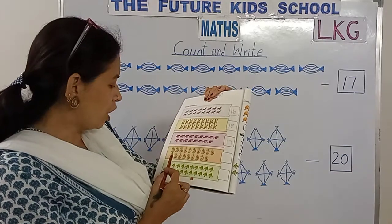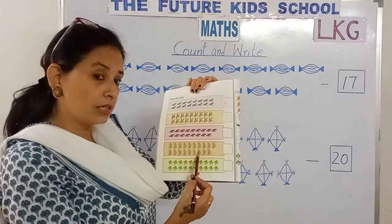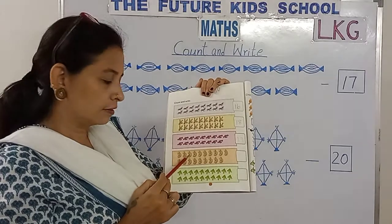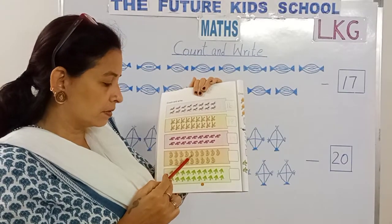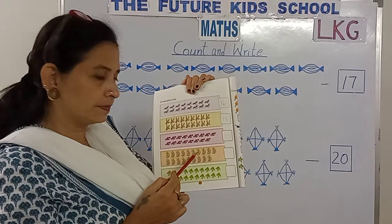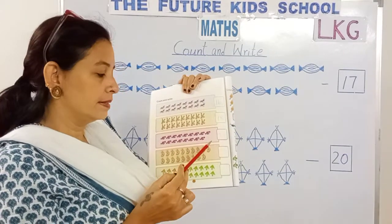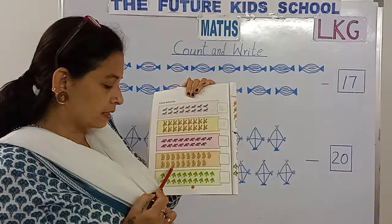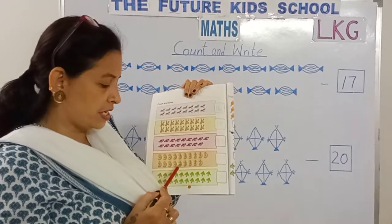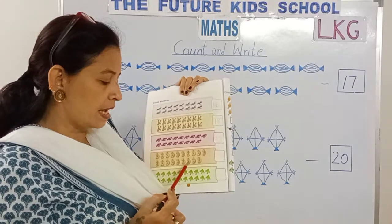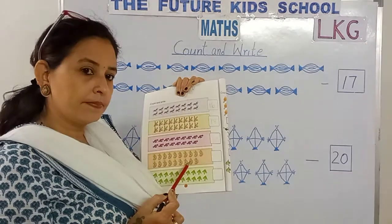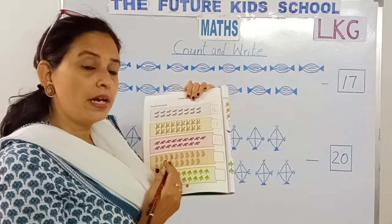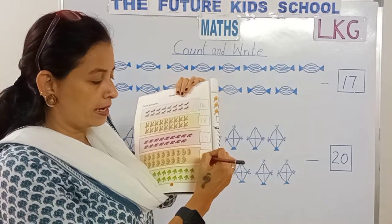We've got water bottles over here. Let's count the number of bottles. 1, 2, 3, 4, 5, 6, 7, 8, 9, 10, 11, 12, 13, 14, 15, 16, 17, 18, 19. 19 water bottles. How many bottles, children? 19. 1 and 9, 19. Write 1 and 9, 19.